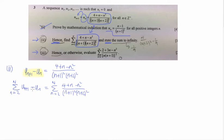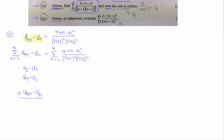If we substitute in n = 2, we get u₃ − u₂, then u₄ − u₃, and so on until the last term u_(N+1) − u_N. Adding all of these up, it's obvious that this is a method of differences — we can cancel away many terms in between. The final result we're left with is u_(N+1) − u₂. That is the answer for this summation.